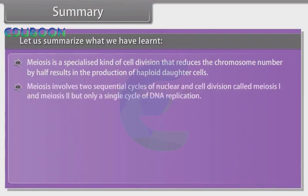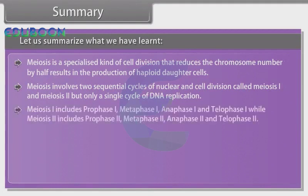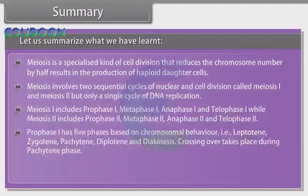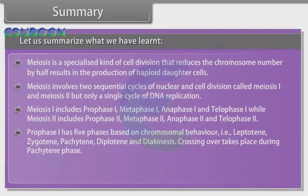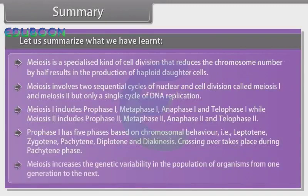Meiosis is a specialized kind of cell division that reduces the chromosome number by half, resulting in the production of haploid daughter cells. Meiosis involves two sequential cycles of nuclear and cell division called meiosis one and meiosis two, but only a single cycle of DNA replication. Meiosis one includes prophase one, metaphase one, anaphase one, and telophase one, while meiosis two includes prophase two, metaphase two, anaphase two, and telophase two. Prophase one has five phases based on chromosomal behavior: leptotene, zygotene, pachytene, diplotene, and diakinesis. Crossing over takes place during pachytene phase. Meiosis increases the genetic variability in the population of organisms from one generation to the next.